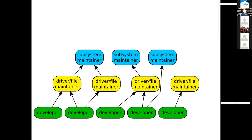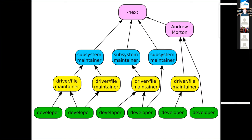We have about 150–200 different subsystem maintainers and trees. Every single day all these trees get pulled into something called linux-next, maintained by Stephen Rothwell in Australia. He merges them all together and reports on conflicts — for example, some IRQ handling changes broke a driver in one of my subsystems because I didn't have those related changes. linux-next tests, builds, boots, and runs on tons of different architectures. Andrew Morton scoops up files and subsystems nobody is maintaining and those go into linux-next as well.